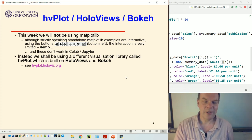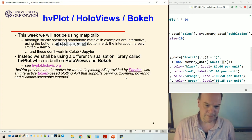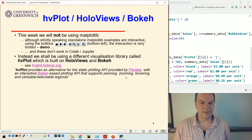So instead of doing that we're going to be using a library called hvplot, which is built on another tool called HoloViews and an interactive visualization library called Bokeh. And here's from the description on the website: provides an alternative to the static plotting API provided by pandas with an interactive bokeh-based plotting API that supports panning, zooming, hovering, and clickable selectable legends.